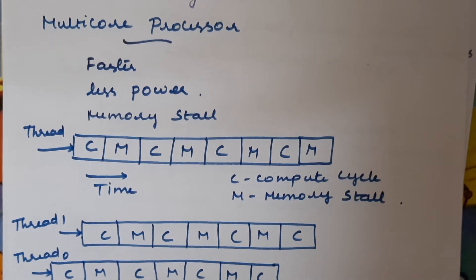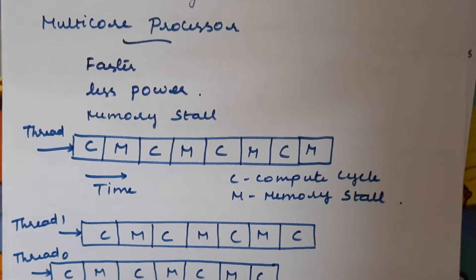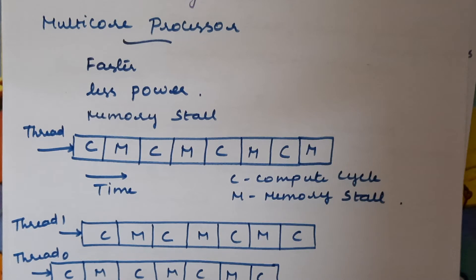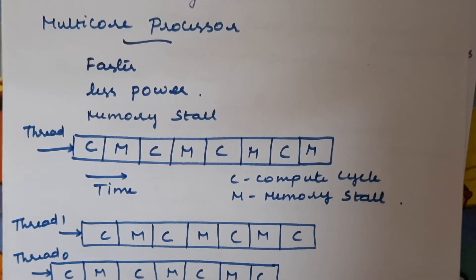Scheduling in a multi-core processor is somewhat more complicated, similar to what we discussed for multiprocessor. Multi-core is even faster than multiprocessor because all the processor, memory, and other required resources are embedded in the same chip. It can access data from memory more easily and within a shorter period of time. It is faster than multiprocessor and also consumes less power, which is another advantage of multi-core processor.